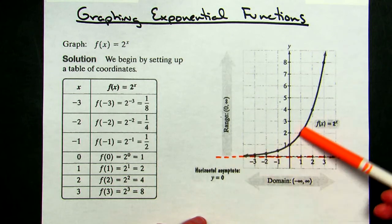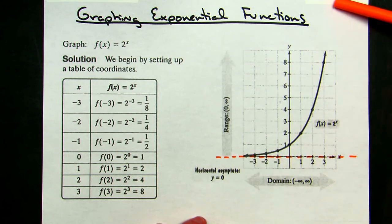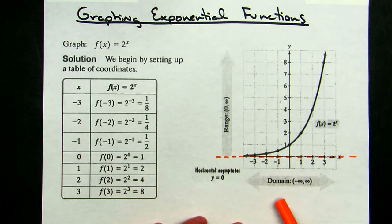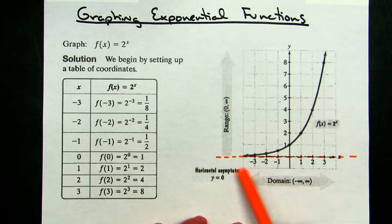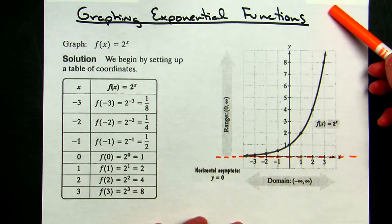The function continues without bound as x approaches infinity. This would be an actual graph of an exponential function. From that, I can clearly see my domain would be from negative infinity to infinity, and my range would be from 0 to positive infinity.